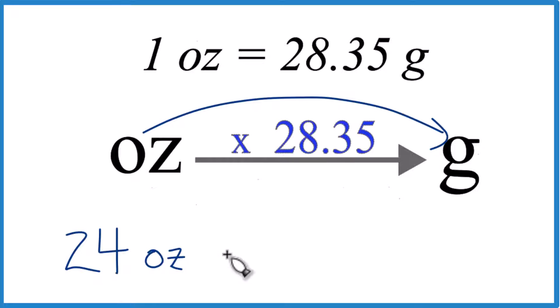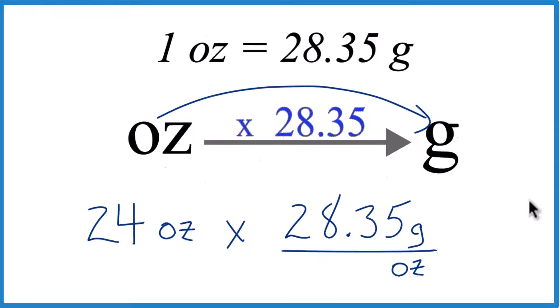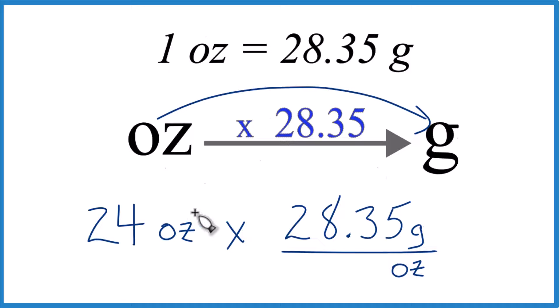But we have 24 ounces here, we multiply by that 28.35 number up there in our conversion factor. And what's nice is when we multiply, we have ounces on the top and the bottom, they just cancel out, we're left with grams. So we know we did it right.